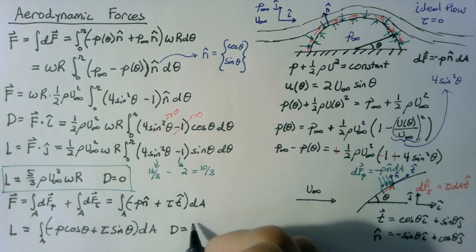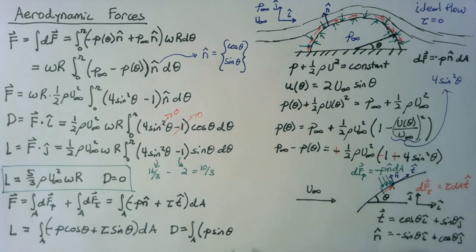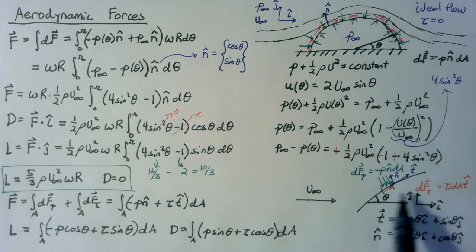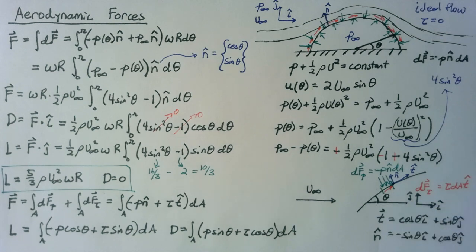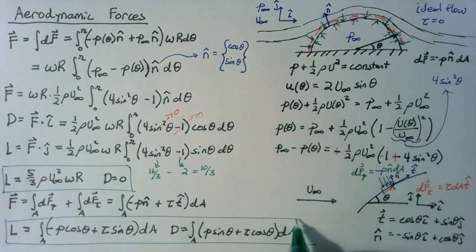For drag, we integrate over the area again. We take the i component, giving the integral of (p sin θ + τ cos θ) dA. At each point along our surface, we determine what angle that surface makes with the oncoming flow to figure out the lift and drag contributions. This is a slightly more general way to define lift and drag.